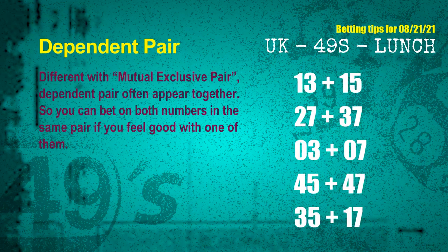Some numbers are mutual-exclusive, some are dependent. Numbers in the same dependent pair you can bet on both, because they are often drawn in one draw. The dependent pairs for next draw are: first pair 13 and 15, second pair 27 and 37, third pair 03 and 07, fourth pair 45 and 47, fifth pair 35 and 17.